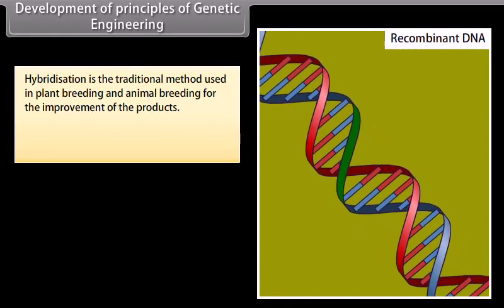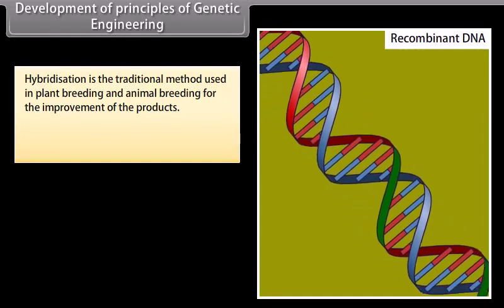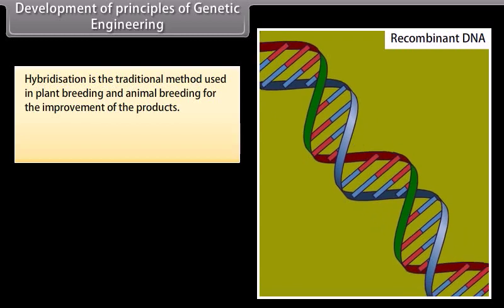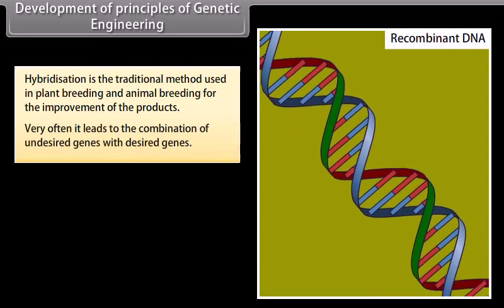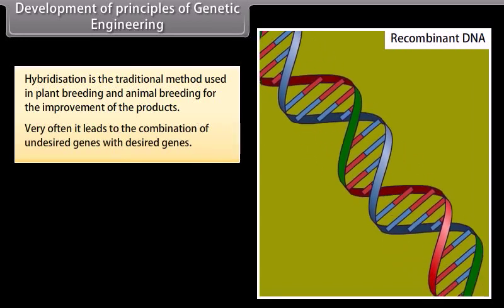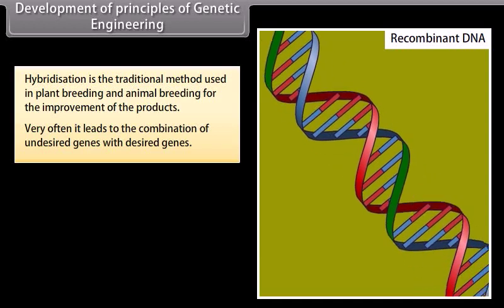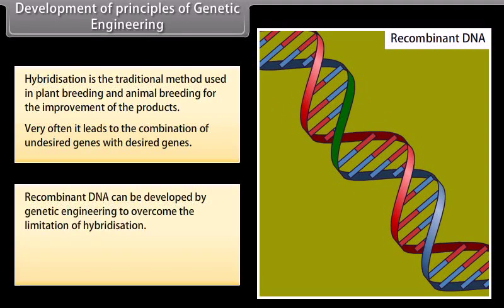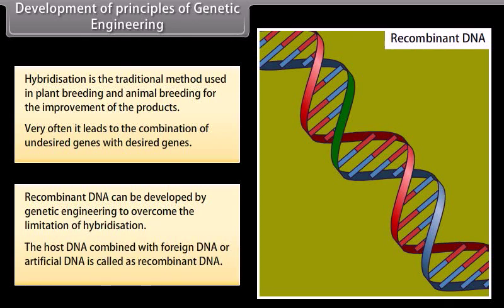Development of principles of genetic engineering. Hybridization is the traditional method used in plant breeding and animal breeding for the improvement of products. Very often it leads to the combination of undesired genes with desired genes. Recombinant DNA can be developed by genetic engineering to overcome the limitation of hybridization. The host DNA combined with foreign DNA or artificial DNA is called recombinant DNA.